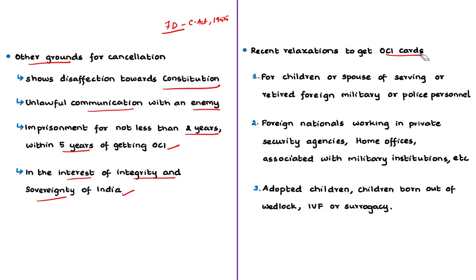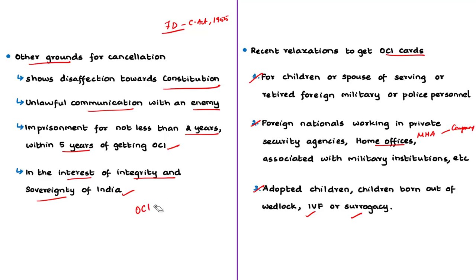Recent relaxations for obtaining OCI status include: children and spouses of foreign military or police personnel, whether working or retired, are now eligible. Foreign nationals working in private security agencies, home offices, prisons, national probation service, and companies associated with home offices or military institutions may also be considered. Additionally, adopted children, children born in a living relationship, and children born through IVF or surrogacy may be considered for OCI registration.